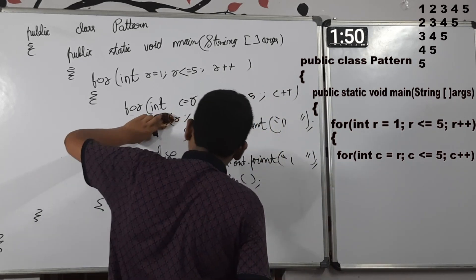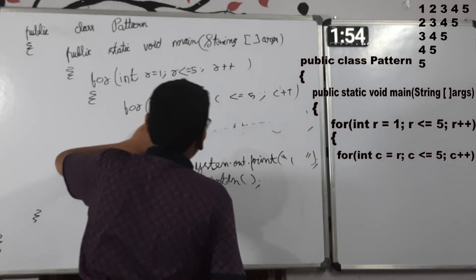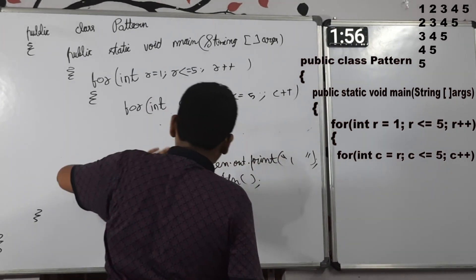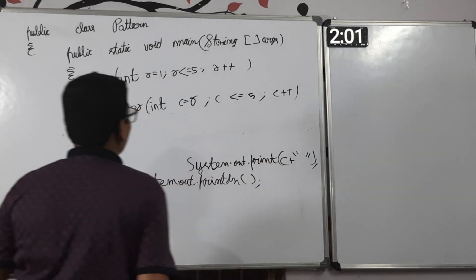Since there is no alternate condition, we do not require any if condition. So, we display c value with some space.